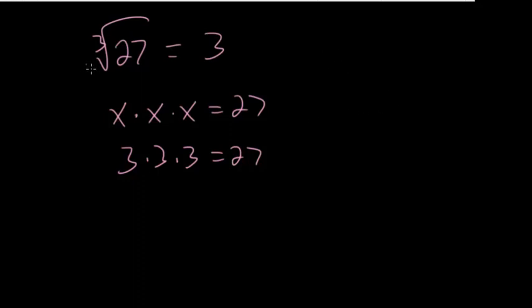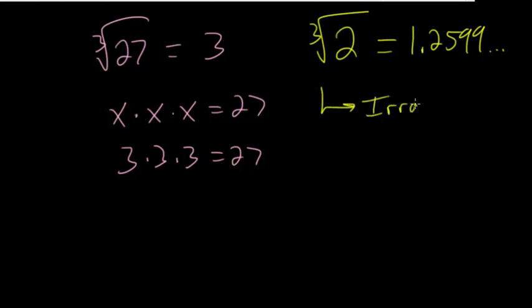Cube roots can become quite difficult if they're not perfect cubes. For example, the cube root of 2 has no whole number that when multiplied by itself 3 times gives you 2, so these would be irrational numbers. In fact, the cube root of 2 would be 1.2599, and then the decimals would go on with no pattern. Most cube roots are irrational numbers and cannot be written as fractions.